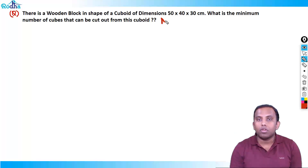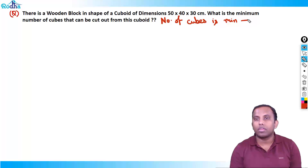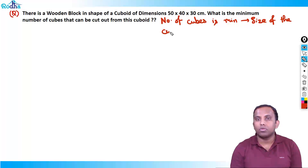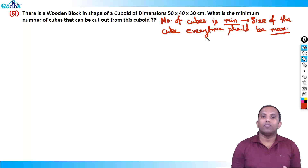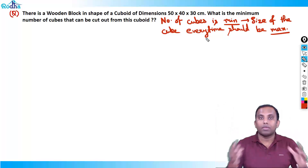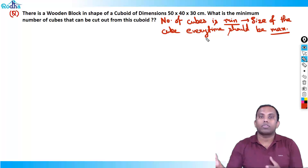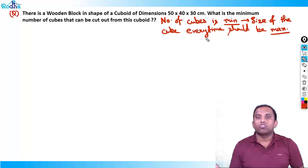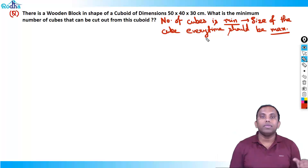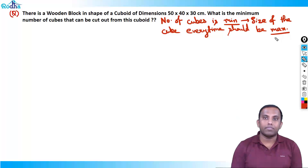Because the number of cubes is minimum, the size of the cube every time should be maximum. If you cut a maximum size cube from a cube void, less material will be left. Then you again take the maximum size cube from the remaining cube void — again less material is left. So ultimately, when this wooden block is completely finished, you have fewer cubes because the size of each cube was big. So the size of the cube every time should be maximum.